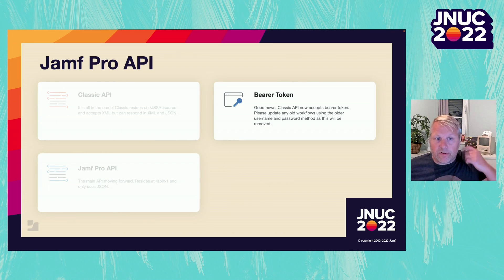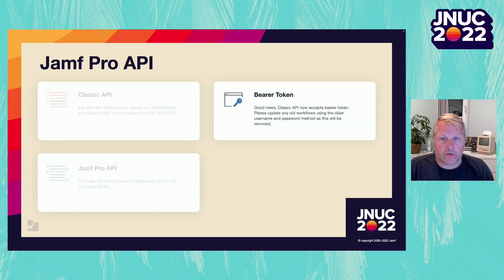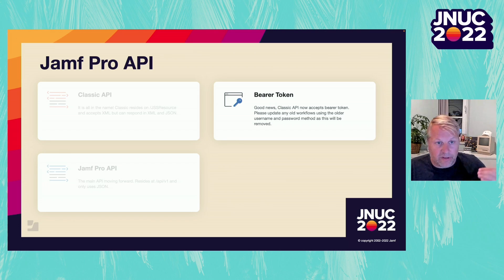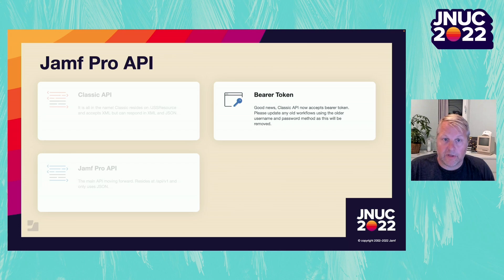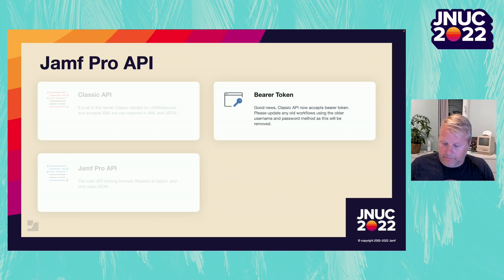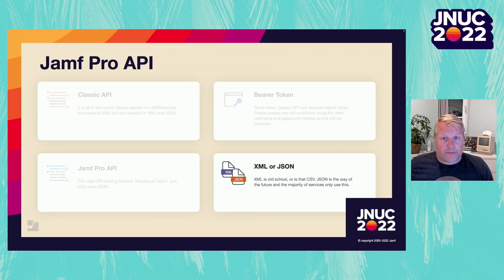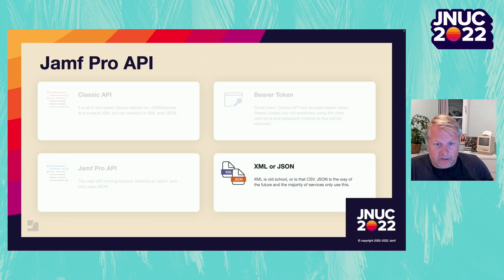A few Jamf Pro versions ago, we updated the Classic API to make use of the Bearer token — an important security change. So if you didn't have it already, please update your workflows. By the end of the year, Bearer token will be the only way to authenticate. With the Classic API, you have the ability to post an XML file only, not a JSON file.